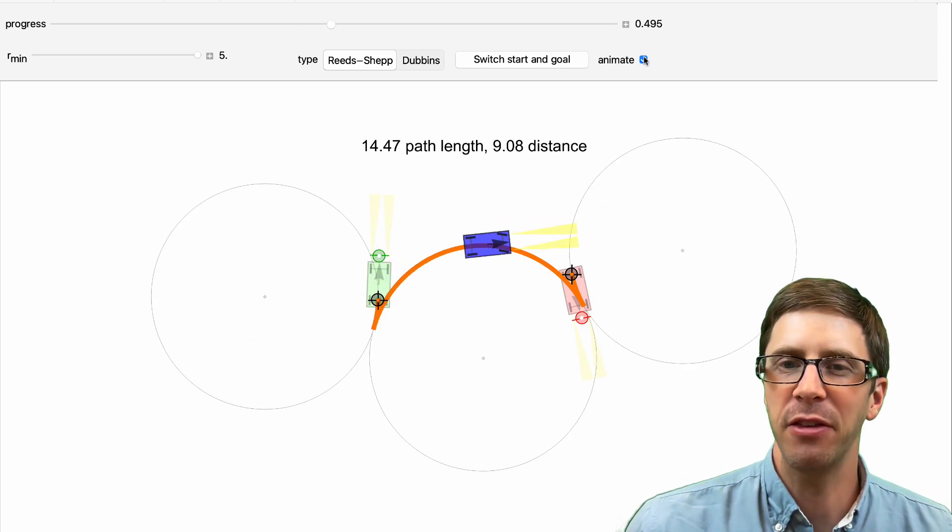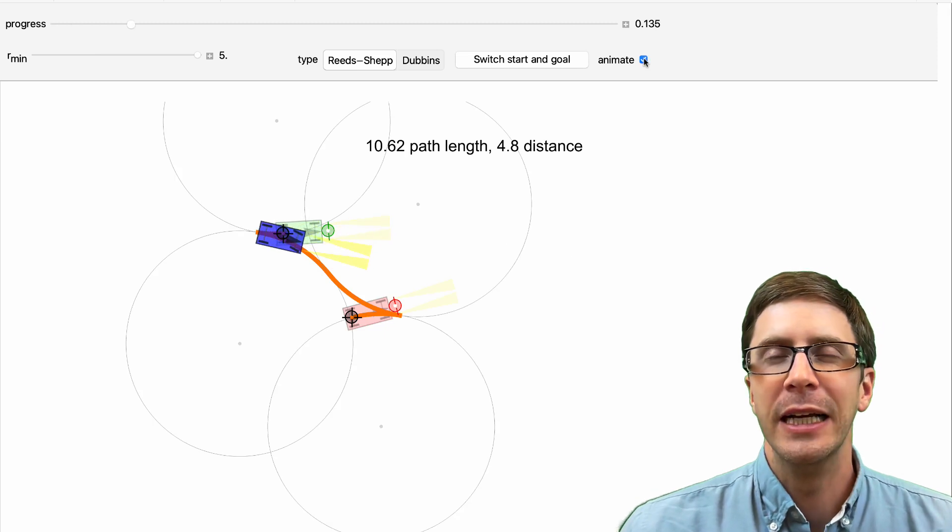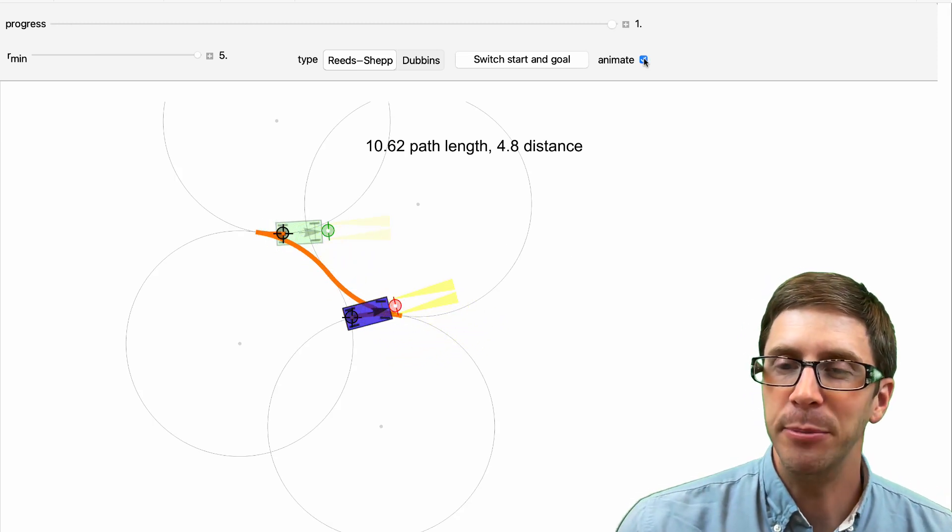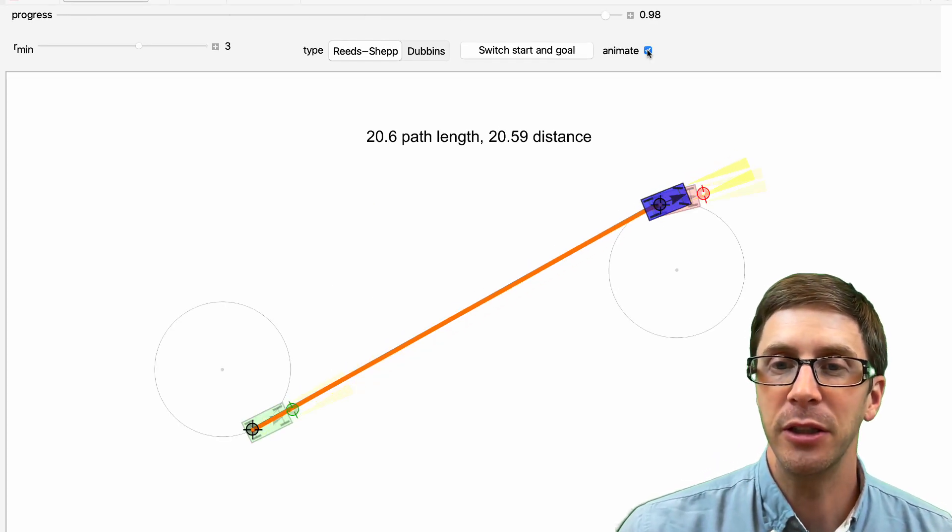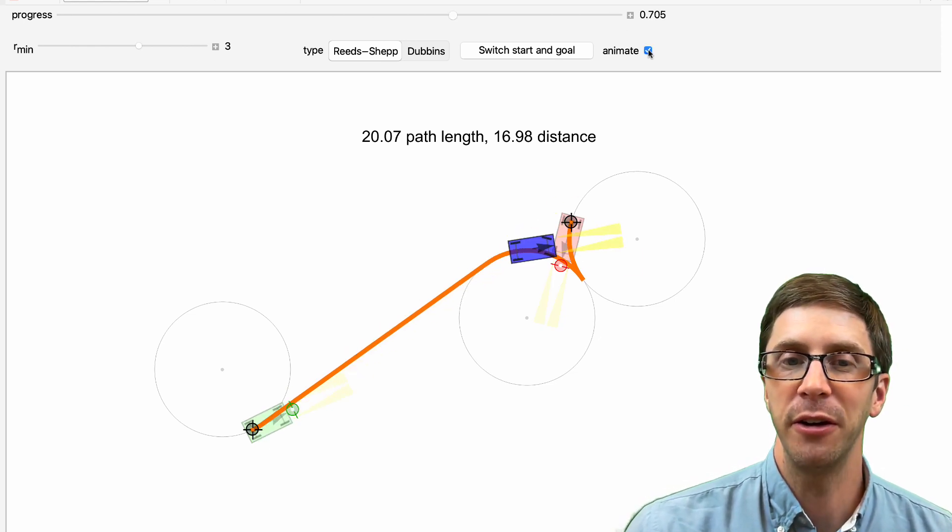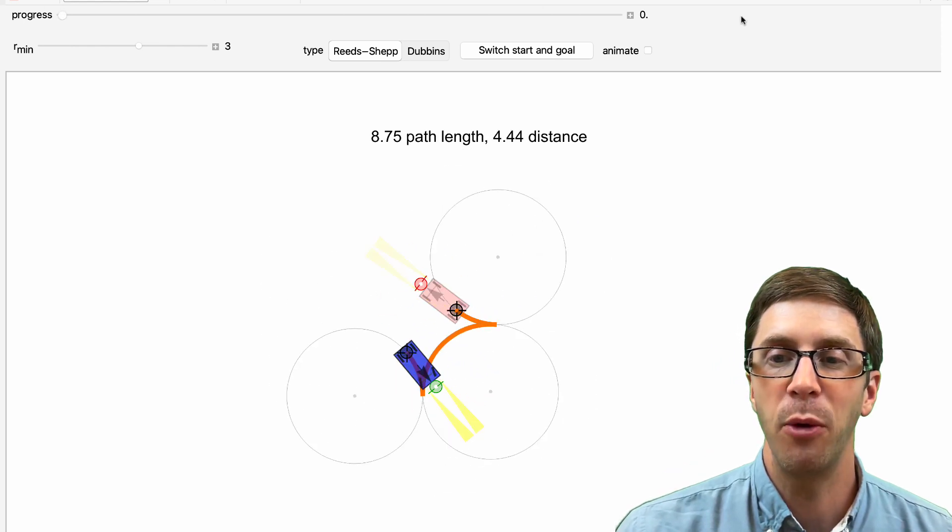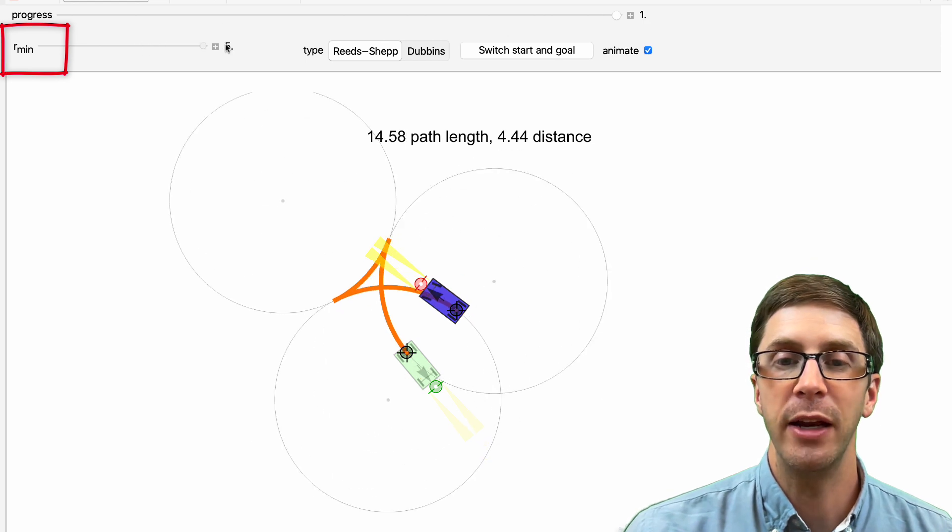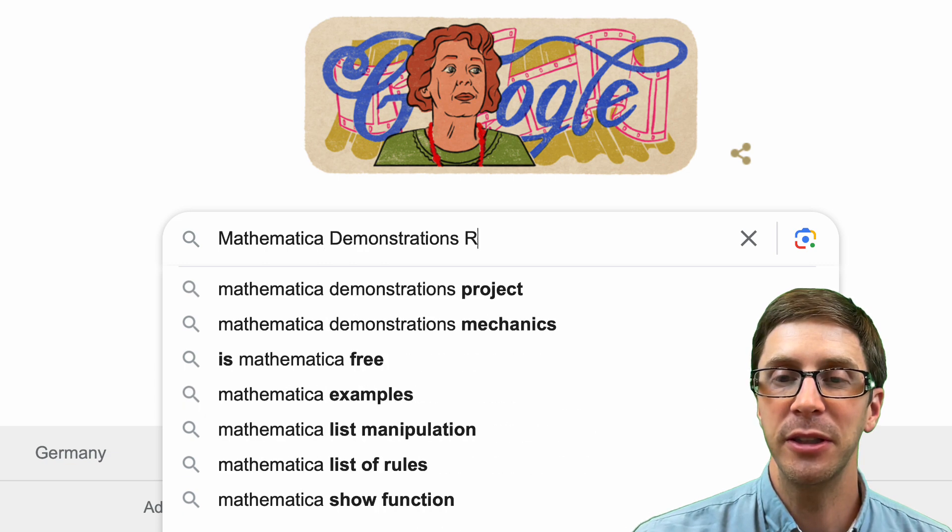What is the shortest length path for a car that can go forwards and backwards? Like most of life, the answer is, it depends. Sometimes you can drive straight to the goal. Sometimes you need to change direction. There are setups where the shortest path is a three-point turn. This demonstration computes the shortest length path for a car with a forward and a reverse gear and a minimum turning radius R-min. You can play with it online or download the code yourself.